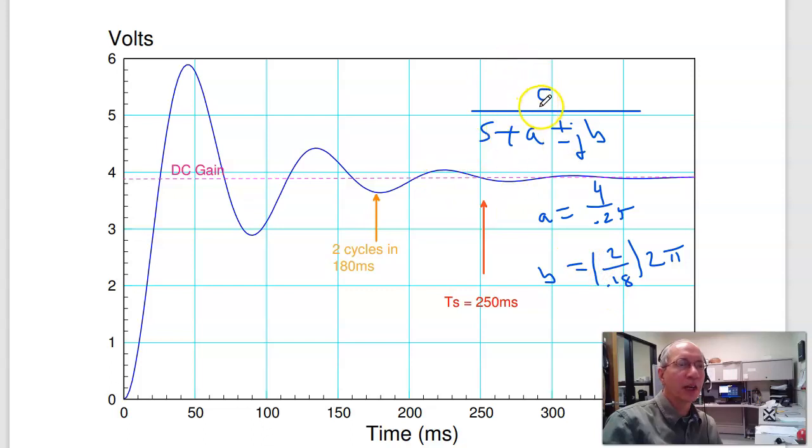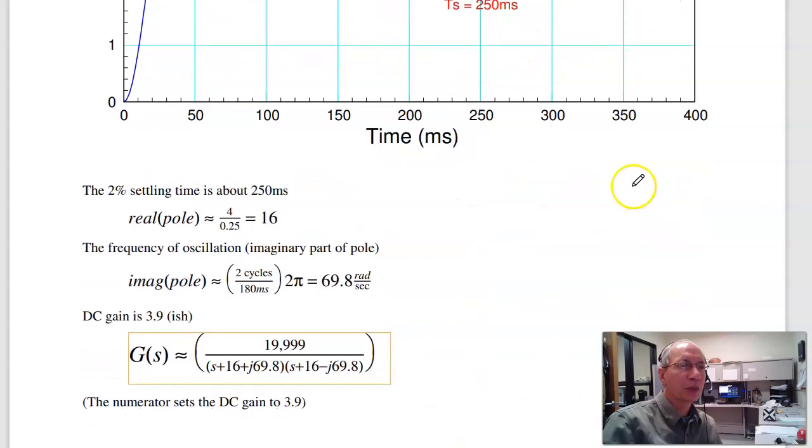And then C is a fudge factor—it adjusts the DC gain. Pick C so the DC gain is right around 3.9. So put that all together, you should get something right around 19,000 over (s + 16 ± j69). Your answers will vary a little bit because it's hard to read a graph to four decimal places, but something around there.